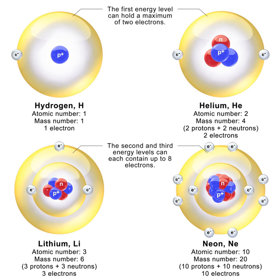The terms isotope and nuclide are often used synonymously, but they refer to chemical and nuclear properties respectively. Strictly speaking, isotopes are two or more nuclides with the same number of protons; nuclides with the same number of neutrons are called isotones. The atomic mass number, symbol A, equals Z plus N. Nuclides with the same atomic mass number are called isobars.